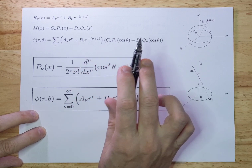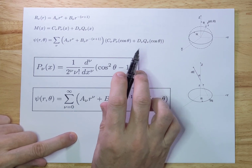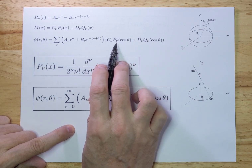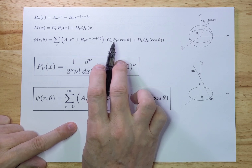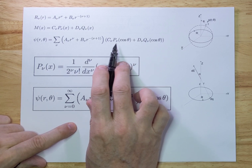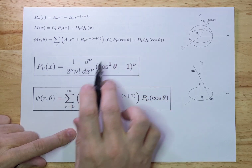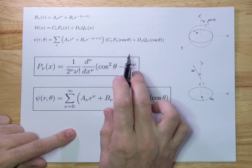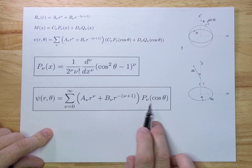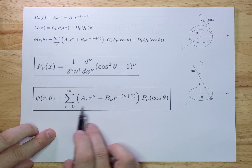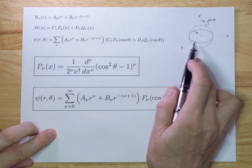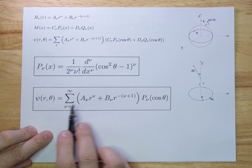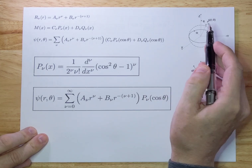The generic solution of the Laplace equation, based on R and theta, is the product of these two solutions. If you go to real-world problems like the one we're solving, you'll find that Q will be zero and you'll have only integer values of nu, which gives you Legendre polynomials. These are quite well known. The Legendre polynomials are defined as such, and you get the generic solution shown here. The task is to calculate A_nu and B_nu — once you know those, you have the potential at any point, either inside or outside the sphere.